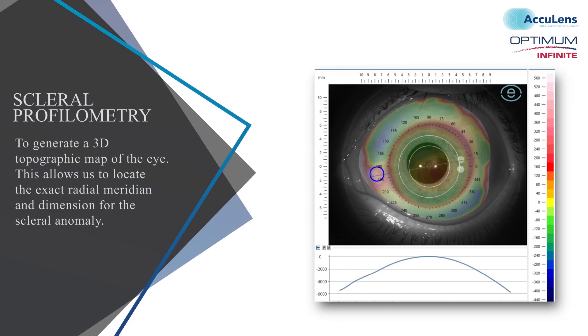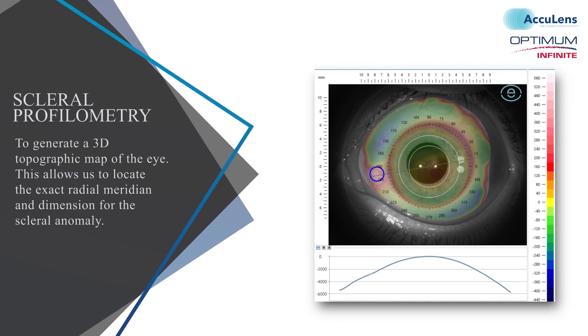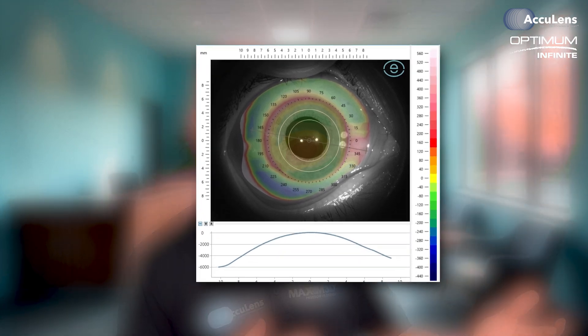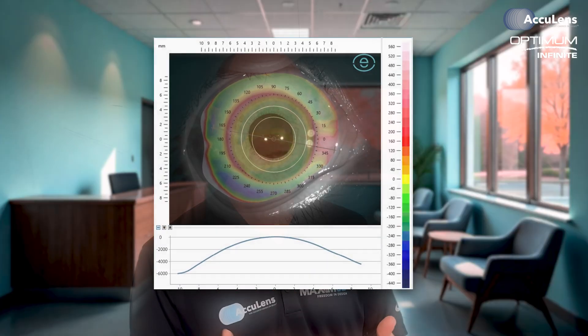For the most precise evaluation, we'll use scleral profilometry to generate a 3D topographic map of the eye. This allows us to locate the exact radial meridian and dimension for the scleral anomaly. For example, rather than simply noting a nasal pinguecula on the right eye, we might identify that the central radian of the elevation is located at 350 degrees with a width of approximately two and a half millimeters. You can also do this at the slit lamp by rotating the beam until it aligns directly over the center of the anomaly, giving you the radial orientation to reference for programming.